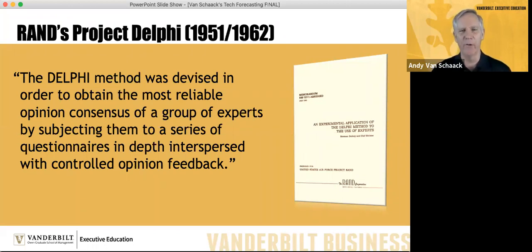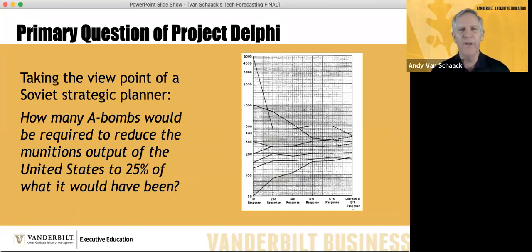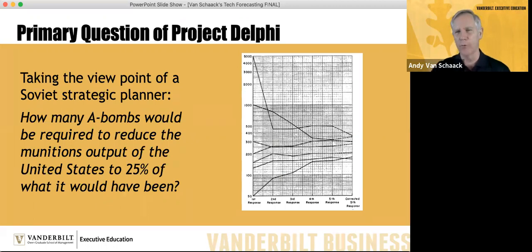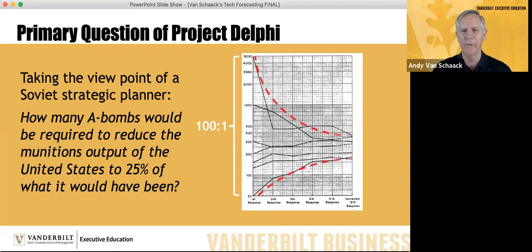What's needed is a way of gathering the collective knowledge of experts without the downsides of focus groups. Back in 1951, the United States government in a program called Project Delphi developed a way to do this. The Delphi method was devised to obtain the most reliable opinion consensus of a group of experts by subjecting them to a series of questionnaires in depth, interspersed with controlled opinion feedback. In that first classified report, experts were asked to take the viewpoint of a Soviet strategic planner — how many atomic bombs would be required to reduce U.S. munitions output to 25%? In the first round, estimates ranged from 50 to 5,000. Through multiple rounds, there was convergence down to a 2-to-1 range.